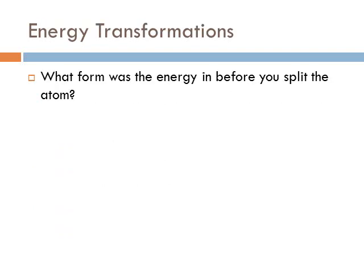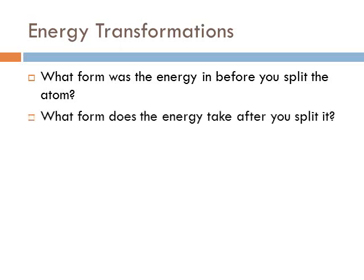Here are some review questions to check yourself. What form is the energy in before you split the atom? It's in the form of mass. What form does the energy take after splitting? The particles go shooting off, so it becomes kinetic energy. How do you actually get electricity out of that kinetic energy? That's the next step — converting it into something usable.